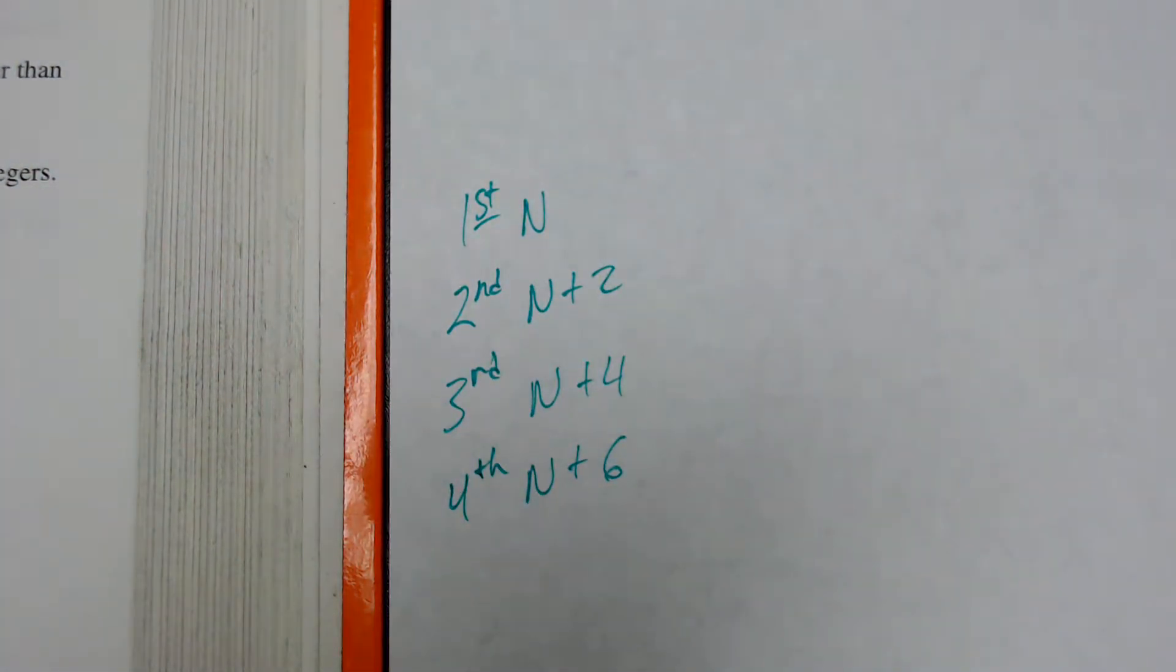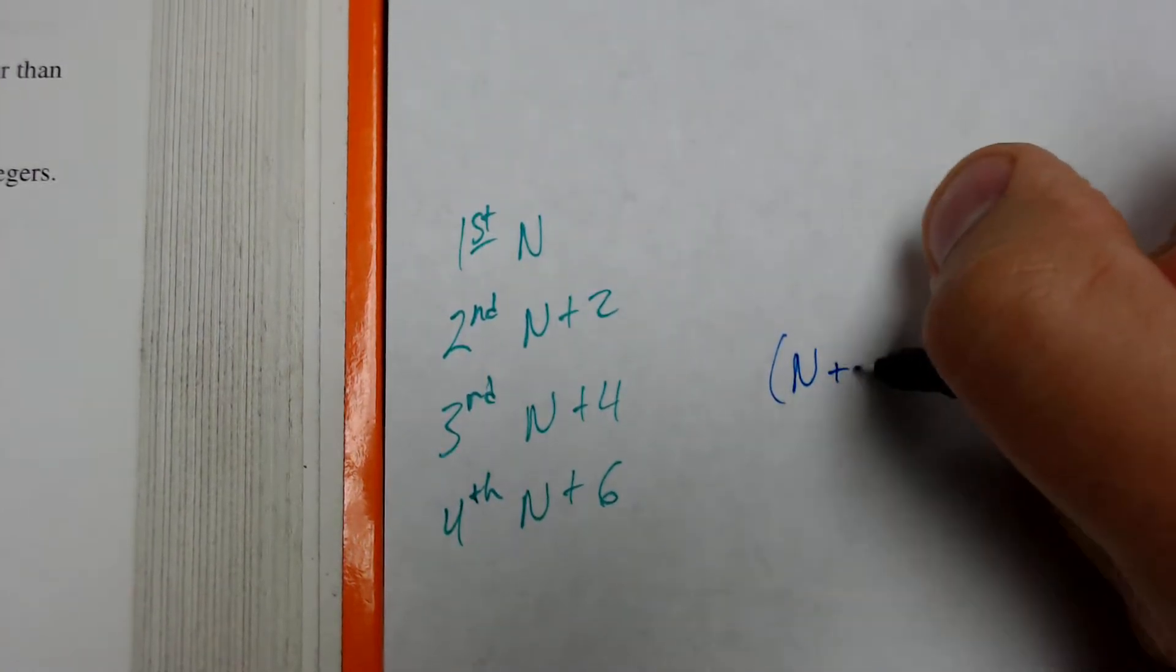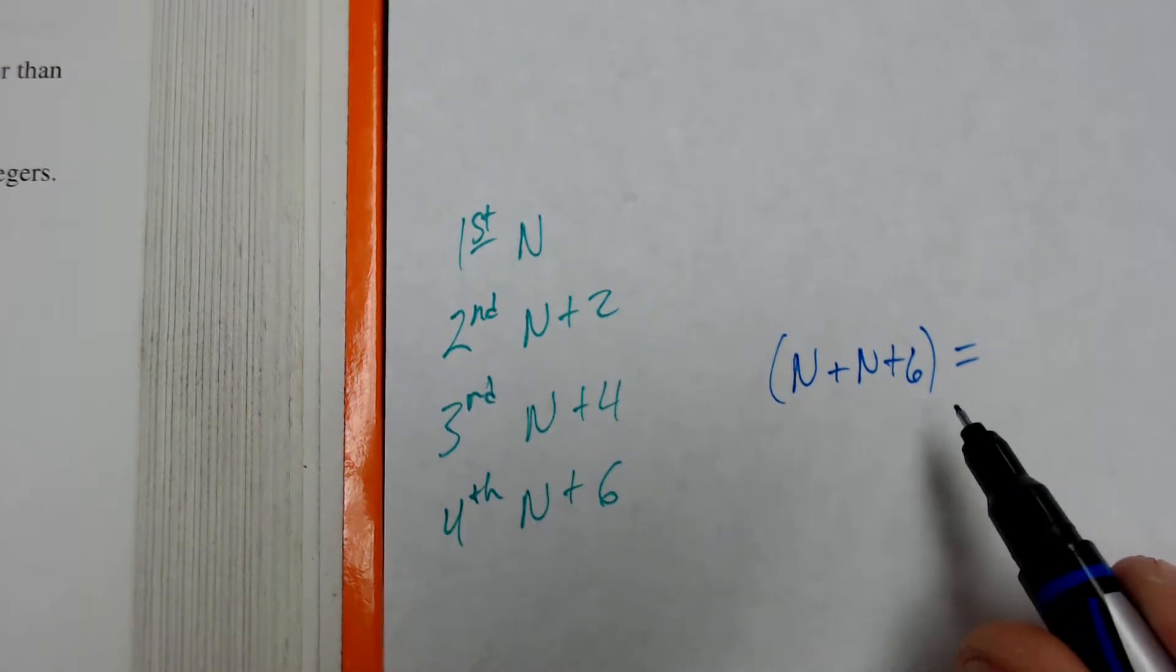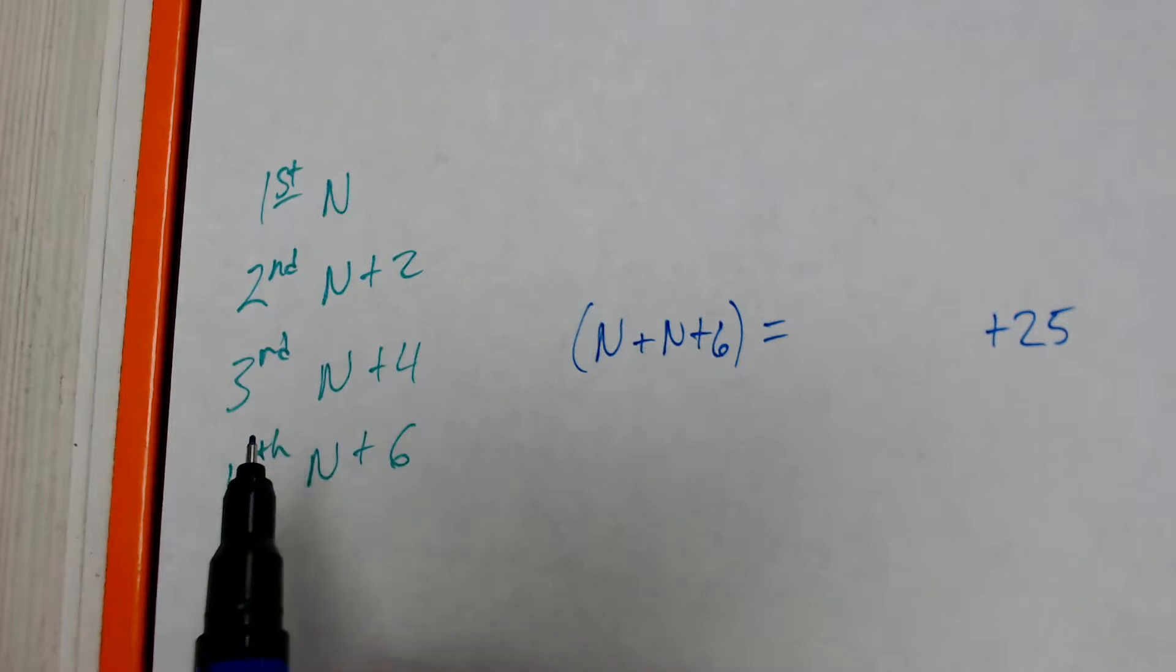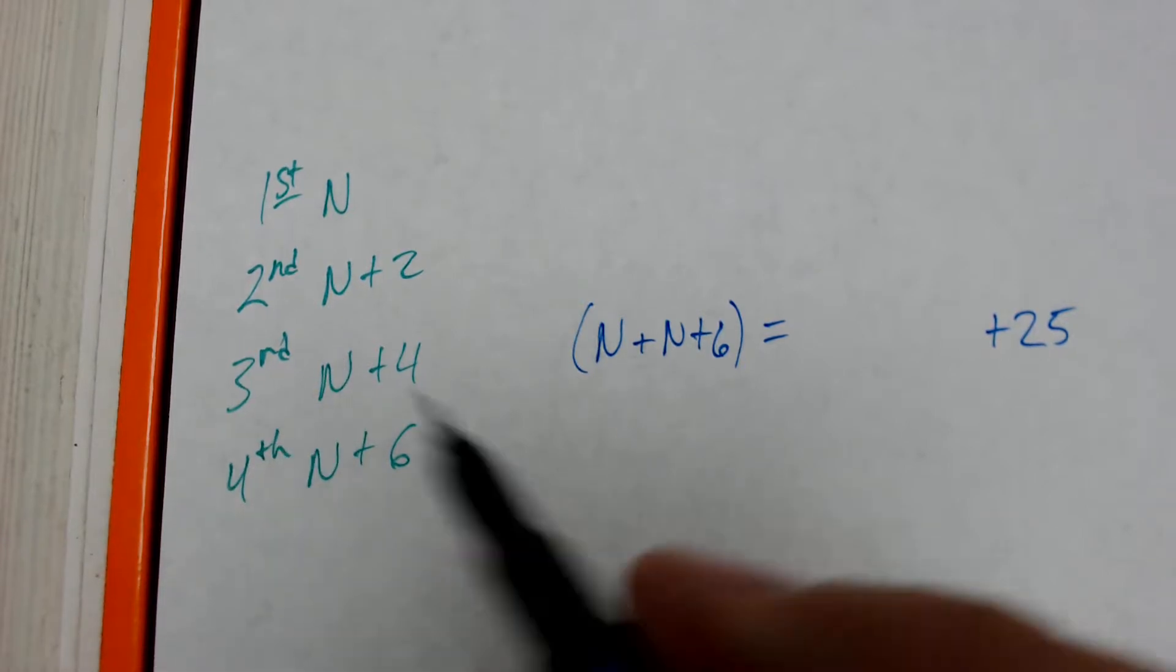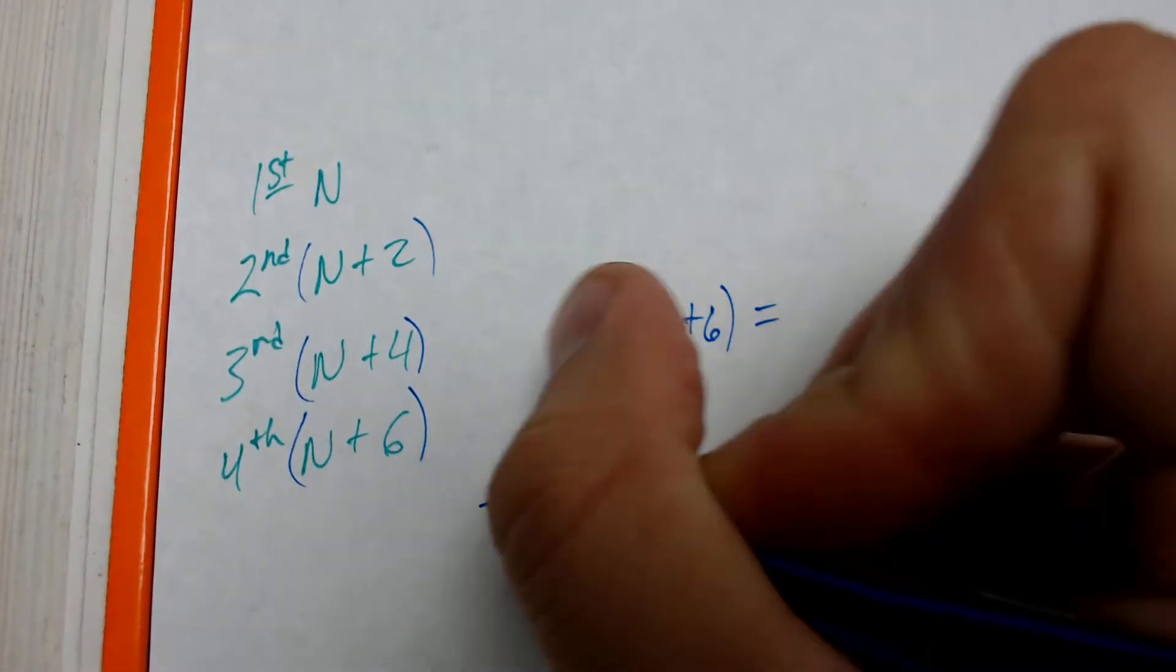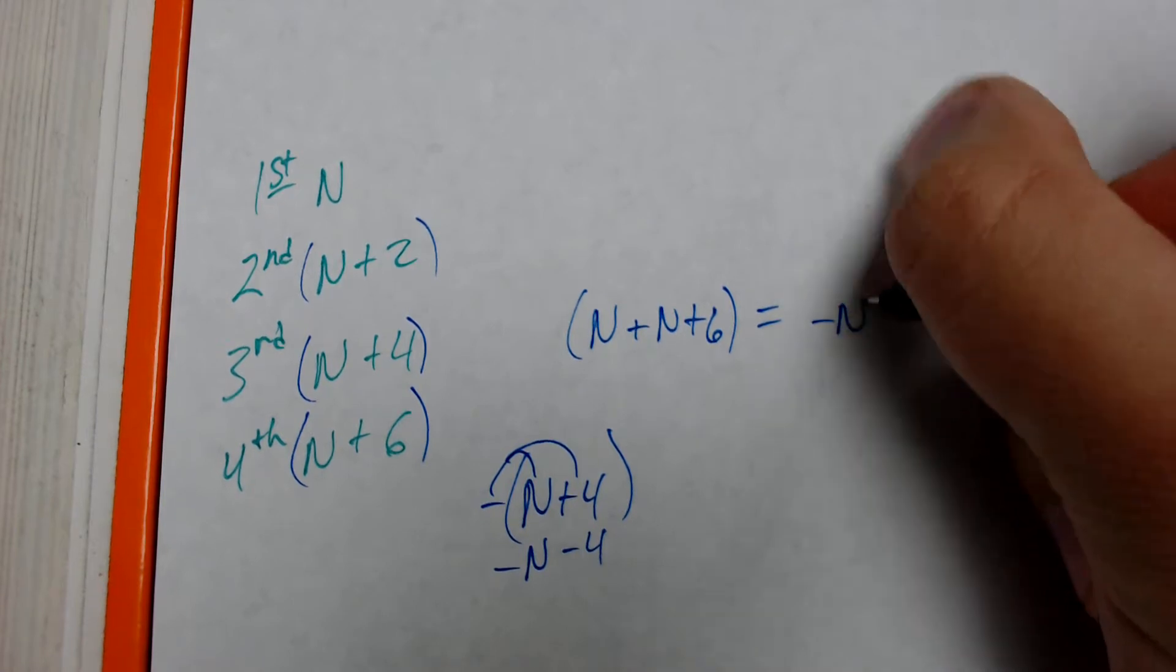Now, they tell me that the sum of the first and the fourth is 25 greater. So, the first one is n. The fourth one is n plus 6. So, n plus n plus 6 is 25 greater, so I'm going to put plus 25 at the end. 25 greater than the opposite of the third. Now, the opposite of the third is not just negative n plus 4. If we apply a negative to n plus 4, that negative is going to distribute, and it's going to become negative n minus 4. So, the opposite of the third, negative n minus 4.